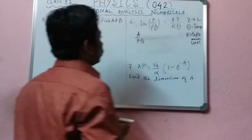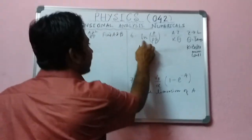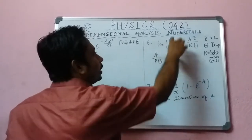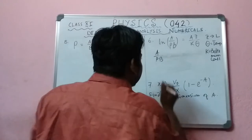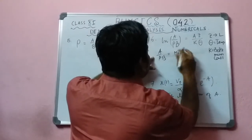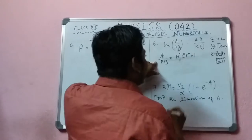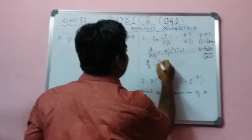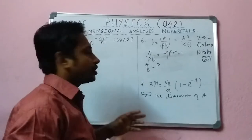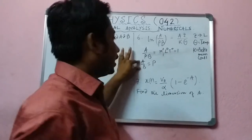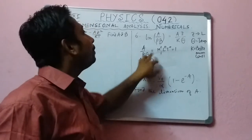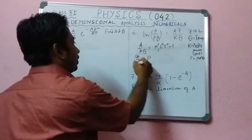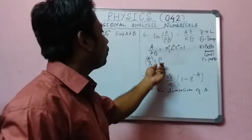Since a/p·b is inside the logarithm, it has no dimension — we write it as M⁰L⁰T⁰, which equals one. So we get a/b equals p (pressure). In some questions they may ask: what is the dimension of a/b? You can write the dimension of a/b is the dimension of pressure.